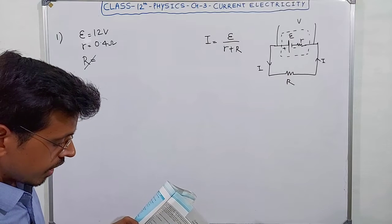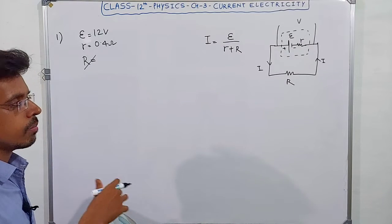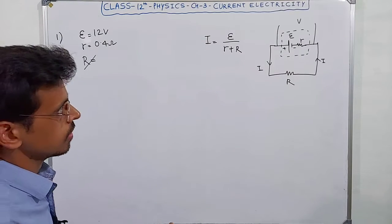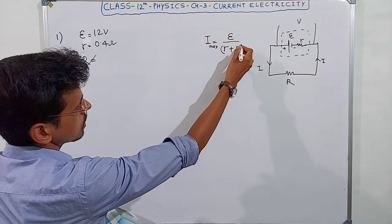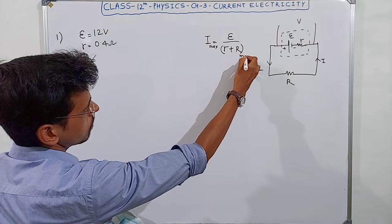What is the maximum current that can be drawn from the battery? How much maximum current can be drawn? What is the denominator? What is the minimum?